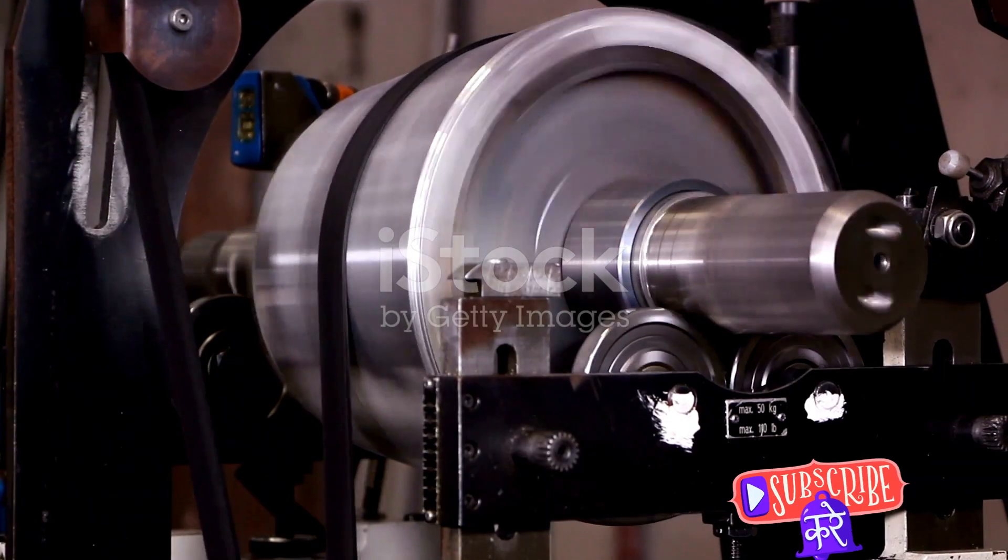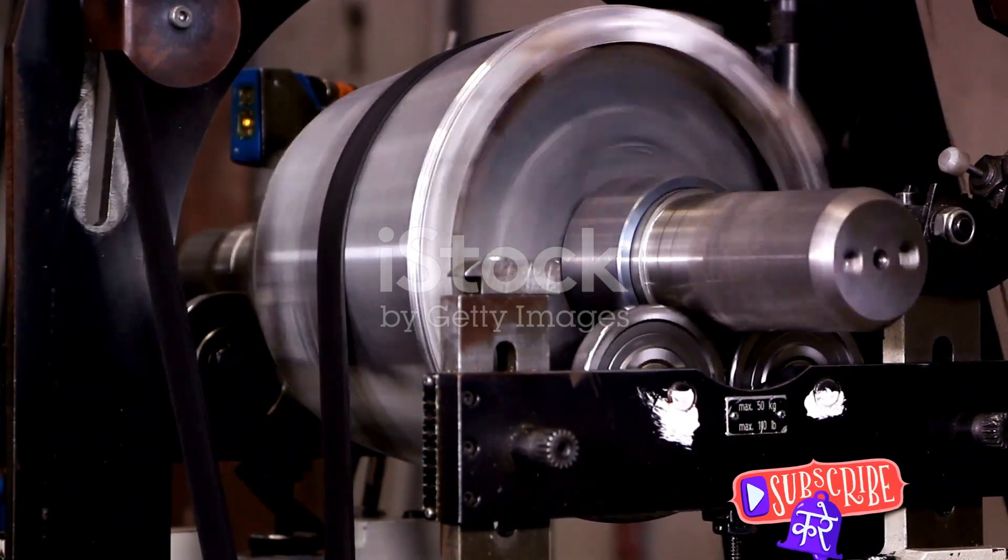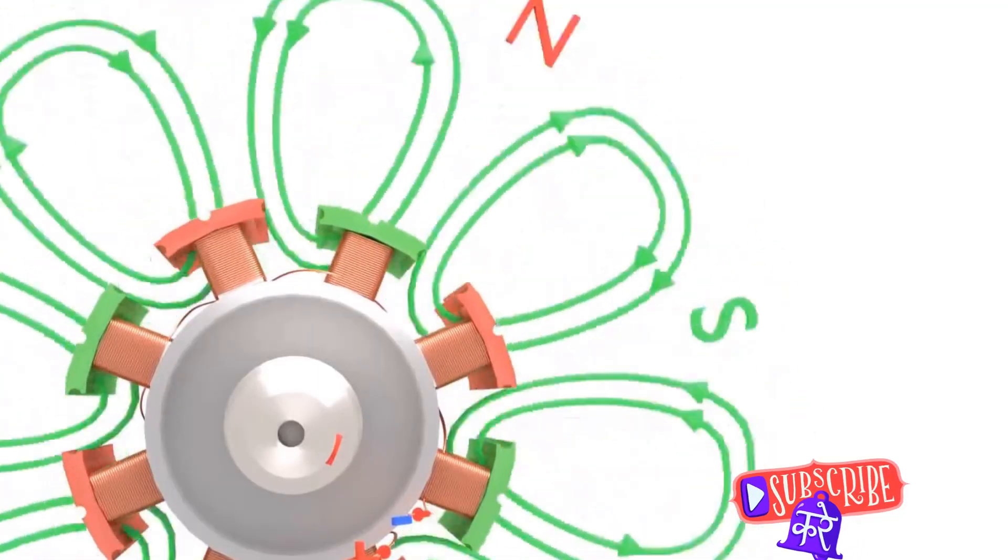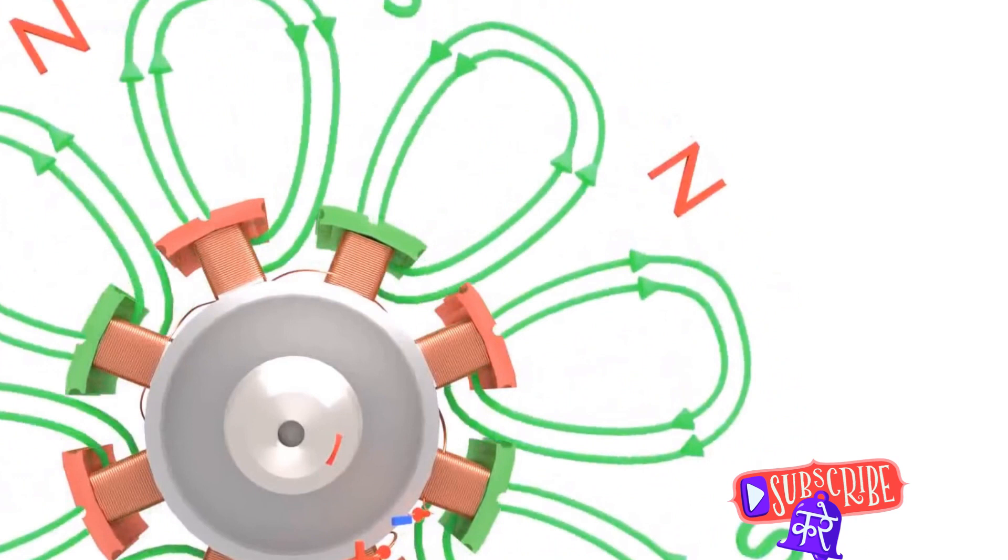Now picture a rotor, the central character in our ballet. It's a magnet that is drawn to follow the magnetic field's pull, much like a compass needle aligns itself to the Earth's magnetic field.